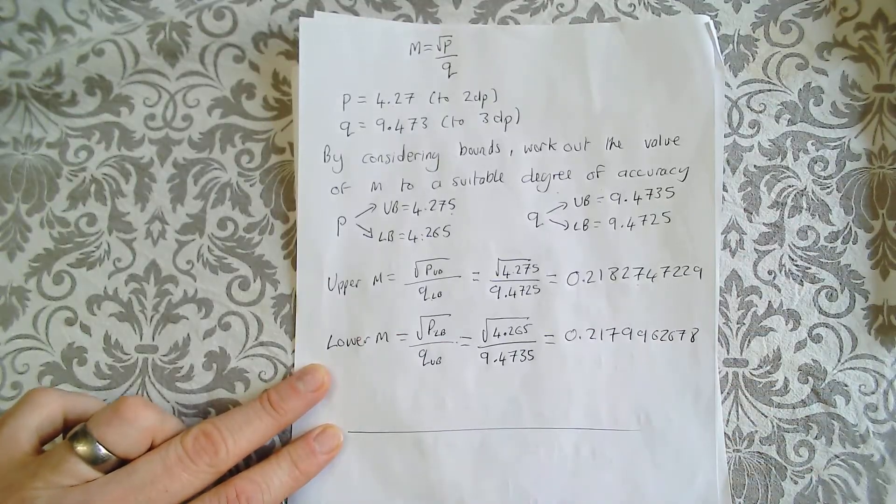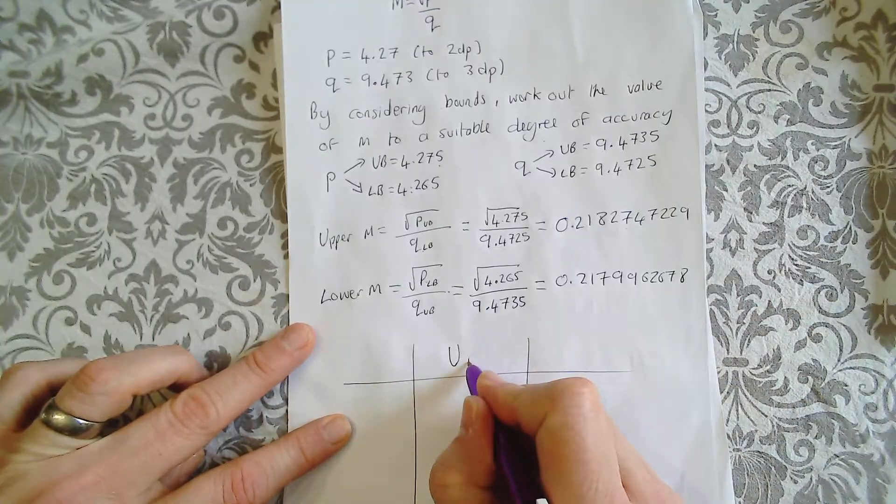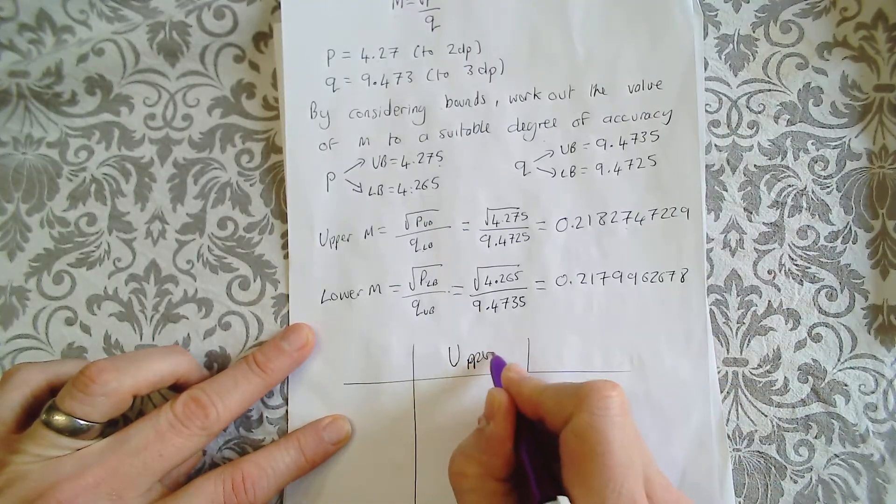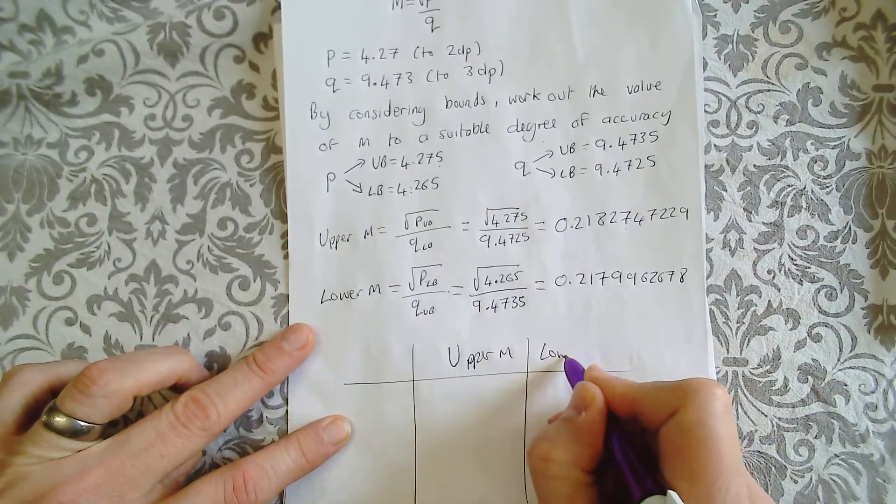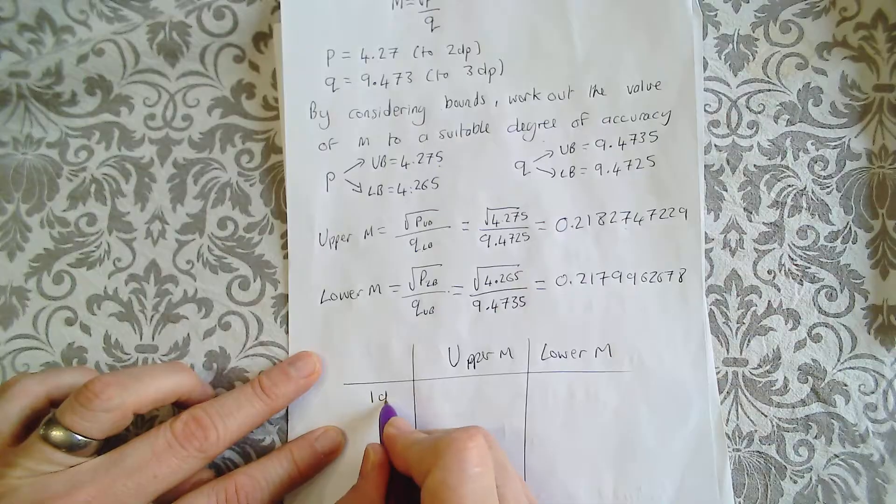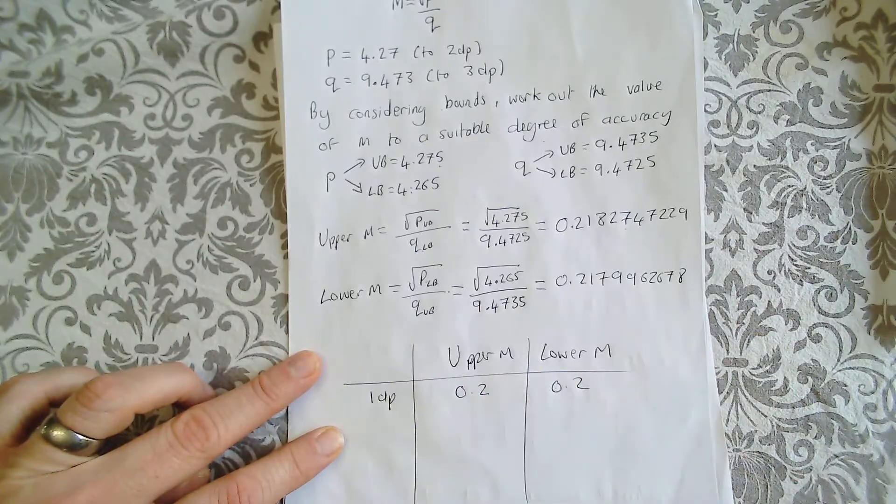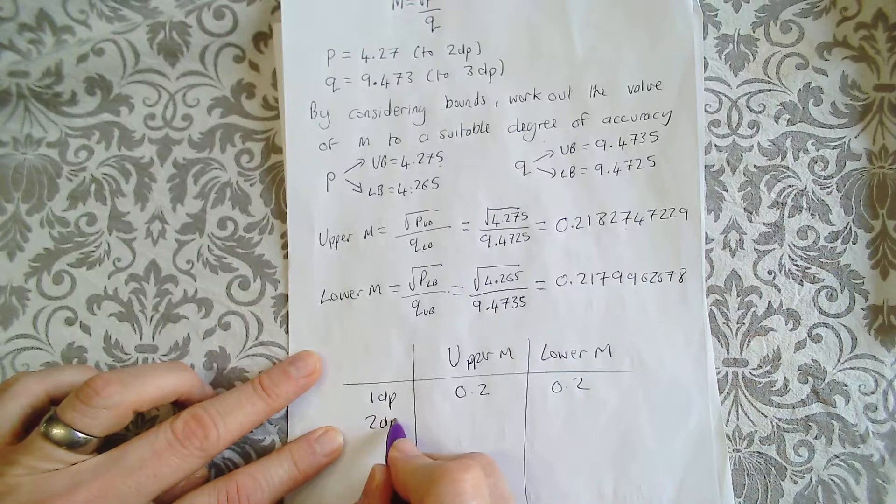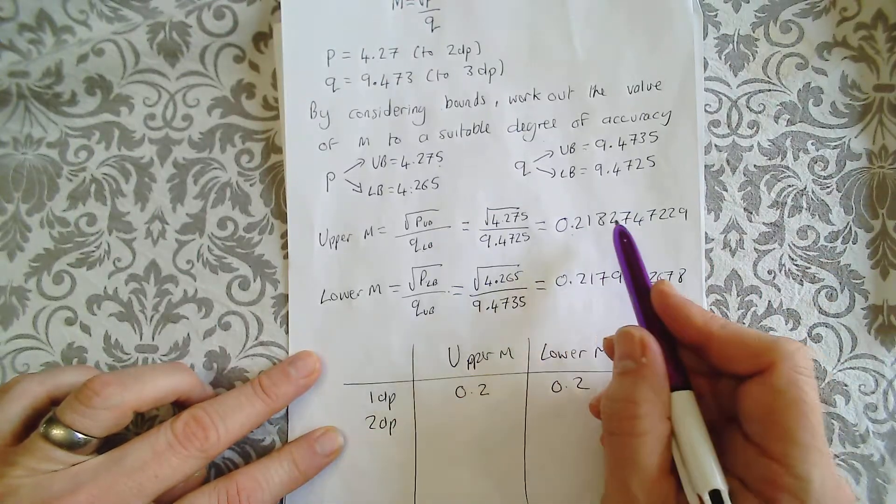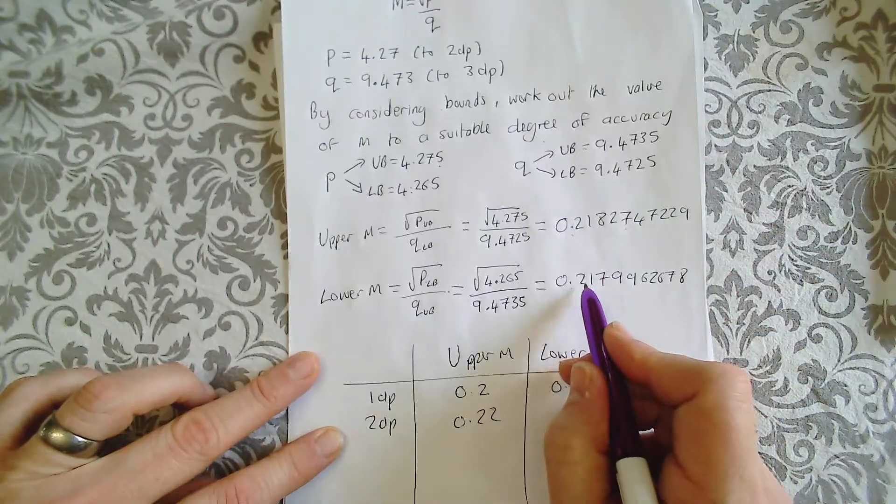I'm going to just do a little table for this. You wouldn't need to do this every time. So upper M, lower M. Now if I did that to one decimal place, I'd get 0.2 for both. If I did that to two decimal places, it would be 0.22. The lower one would also be 0.22.